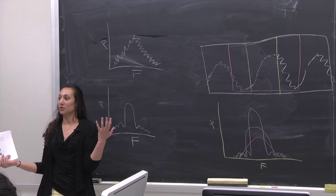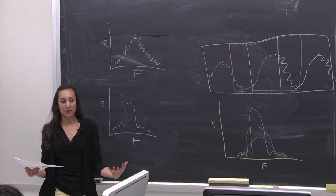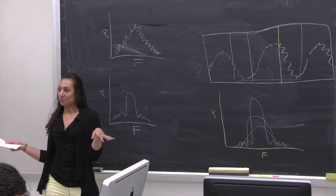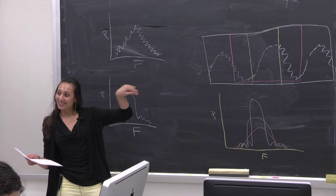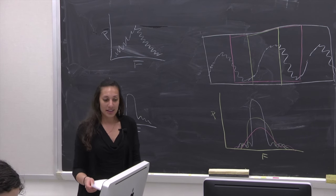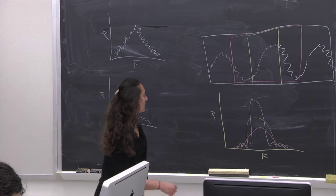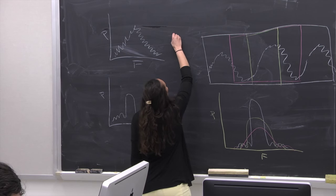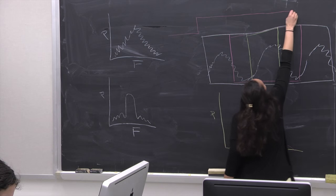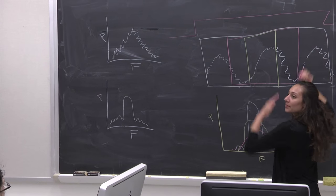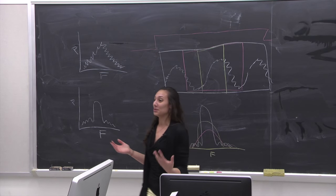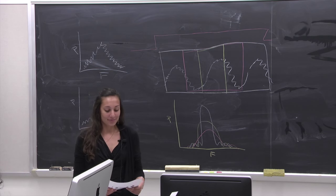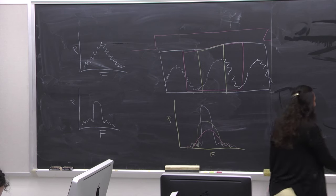Looking at the more mathematical side of things, let's do an example. We're going to base it on a cosine function. In this case we're using what's considered a rectangular window — essentially we say this is zero outside the window, this is the part we cut out. There are other types of windows, and we'll get to the idea of using many windows.